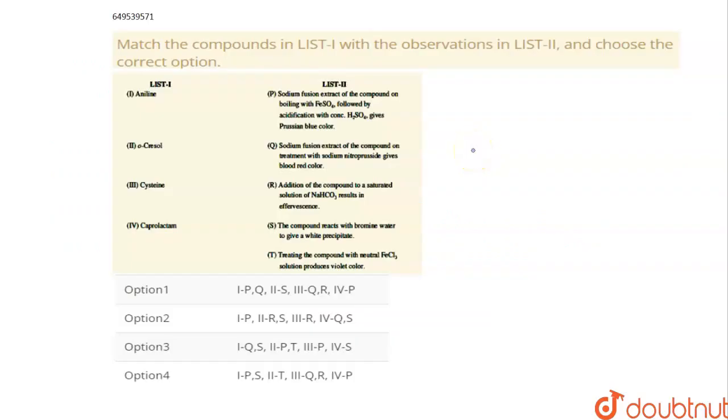Hello, see here they have given that match the compounds in list 1 with the observations in list 2 and choose the correct option. So first one they have given aniline. Aniline is the compound which has substituted nitrogen on benzene. This one is aniline.